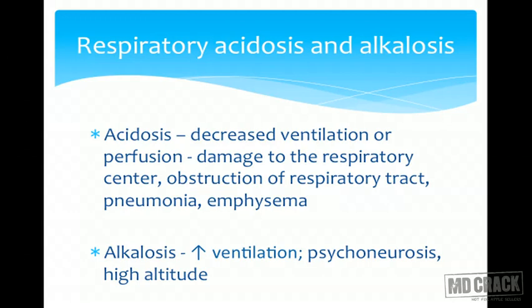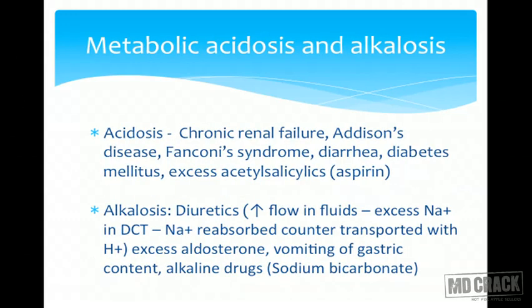Respiratory alkalosis occurs when excess CO2 is excreted due to hyperventilation. A good physiological example is high altitude: decreased atmospheric oxygen stimulates respiration and hyperventilation begins to absorb more oxygen, but as a consequence more CO2 is excreted, causing alkalosis. It can also occur in psychoneurotic cases with excess ventilation.